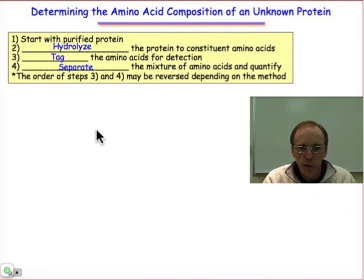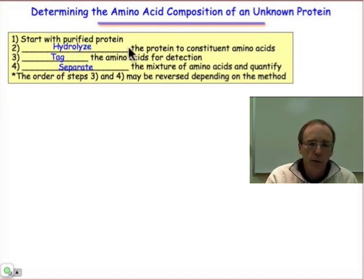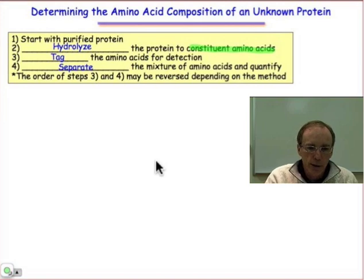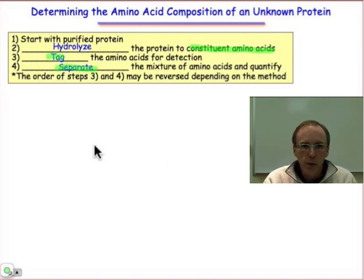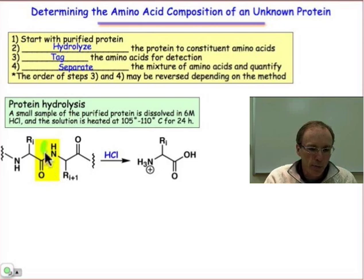Although the methods have gotten more sophisticated, basically they involve three steps shown here. Starting with a purified protein, the first step is to hydrolyze that protein into individual constituent amino acids. The amino acids are tagged, and then in some chromatographic way those tagged amino acids are separated and quantified. The hydrolysis step is basically just breaking down the polypeptides.